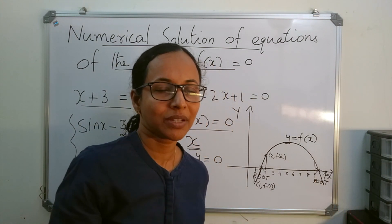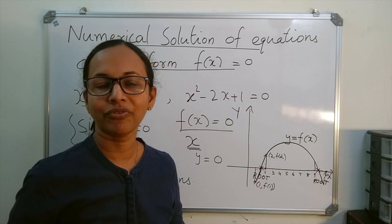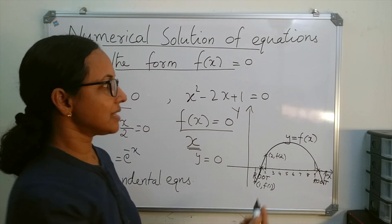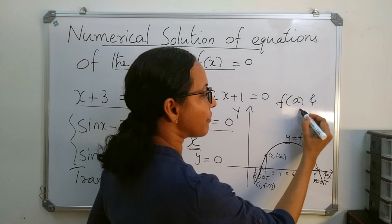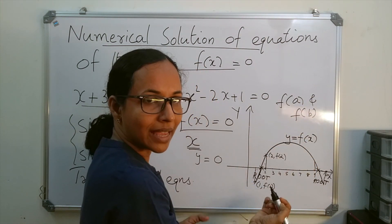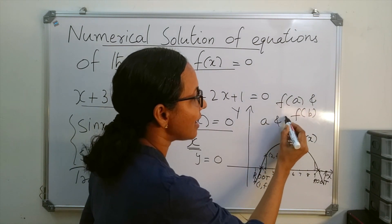We can generalize this: if f(a) and f(b) are of opposite signs, then there is a root which lies between a and b.